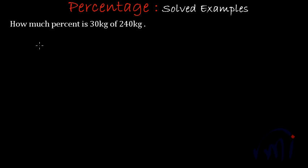If I write it in fraction it will be 30 by 240. And if I want to convert this fraction into percent what I have to do? I have to multiply it by 100. So 0 will cancel 0, 3 1's are 3, 3 8's are 24, 4 2's are 8.